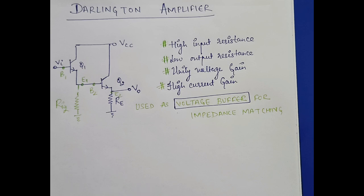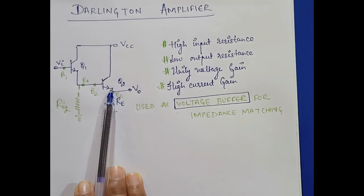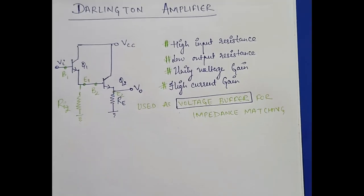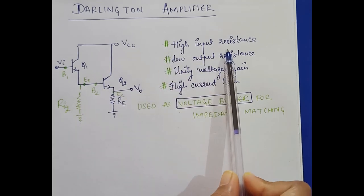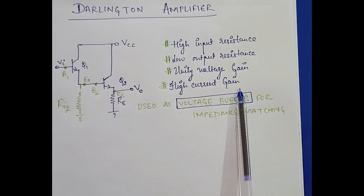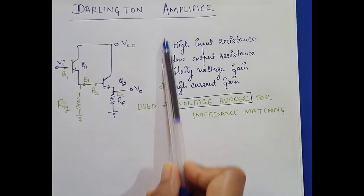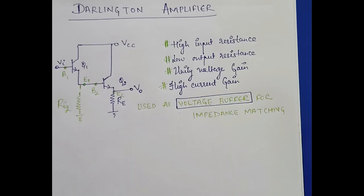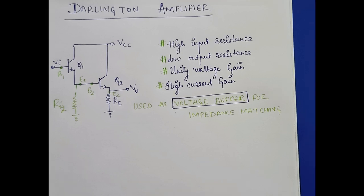The first one is the Darlington amplifier. The Darlington amplifier is a cascade of two common collector amplifiers. Its characteristics include high input resistance, low output resistance, unity voltage gain, and high current gain — since all these are characteristics of common collector configuration. The Darlington amplifier is used as a voltage buffer for impedance matching.